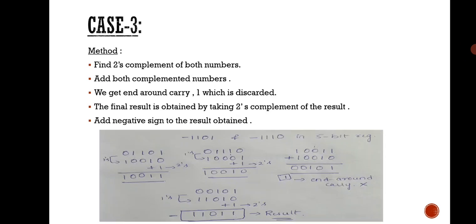Case three: adding two negative numbers. When we add two negative numbers the result will be negative. First, take the two's complement of both numbers, then add both complemented numbers — you will get an end-around carry, discard it. Finally, obtain the result by taking the two's complement of that result. Since both numbers are negative, the resultant will also be negative. I have pictorially represented this with an example to show how to deal with two negative numbers.